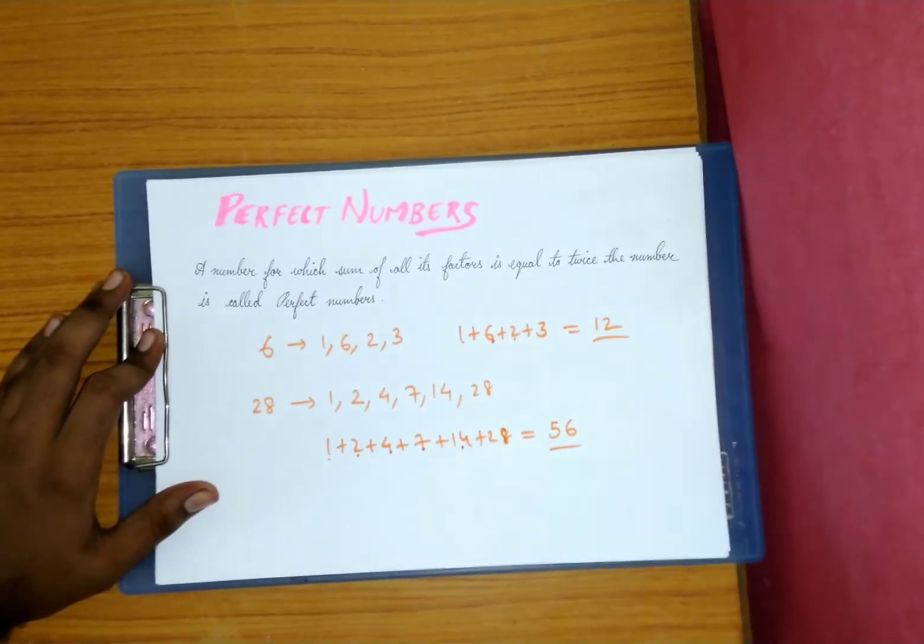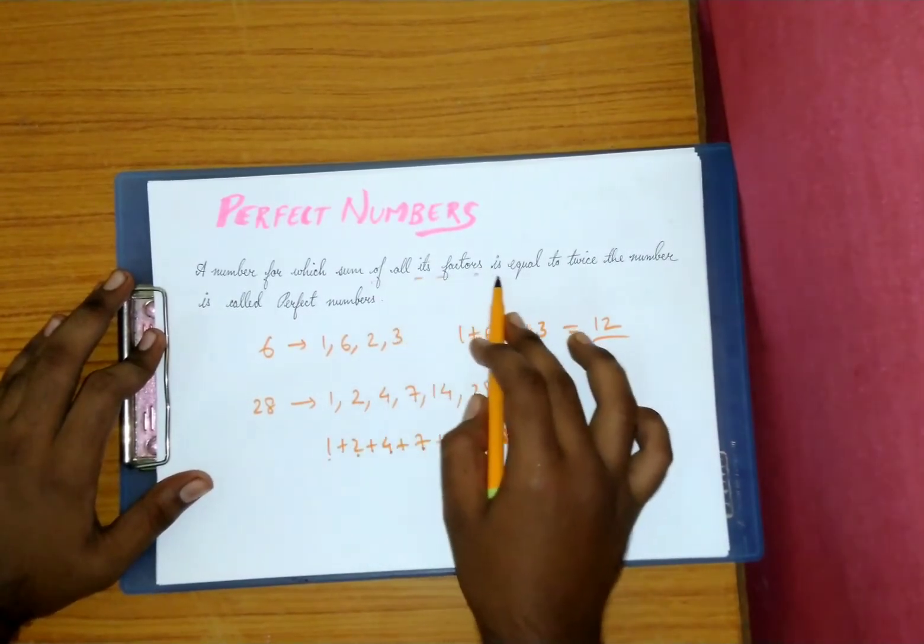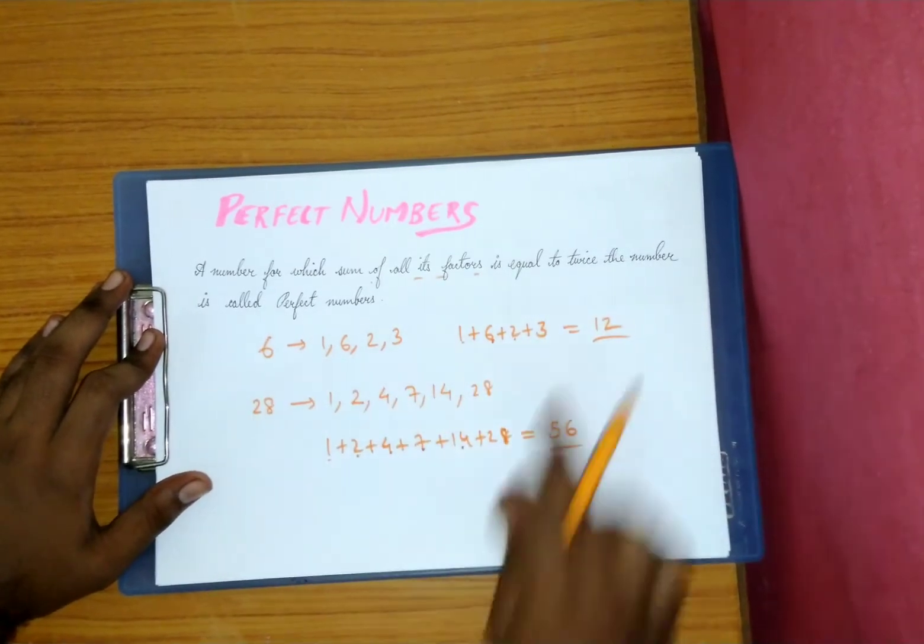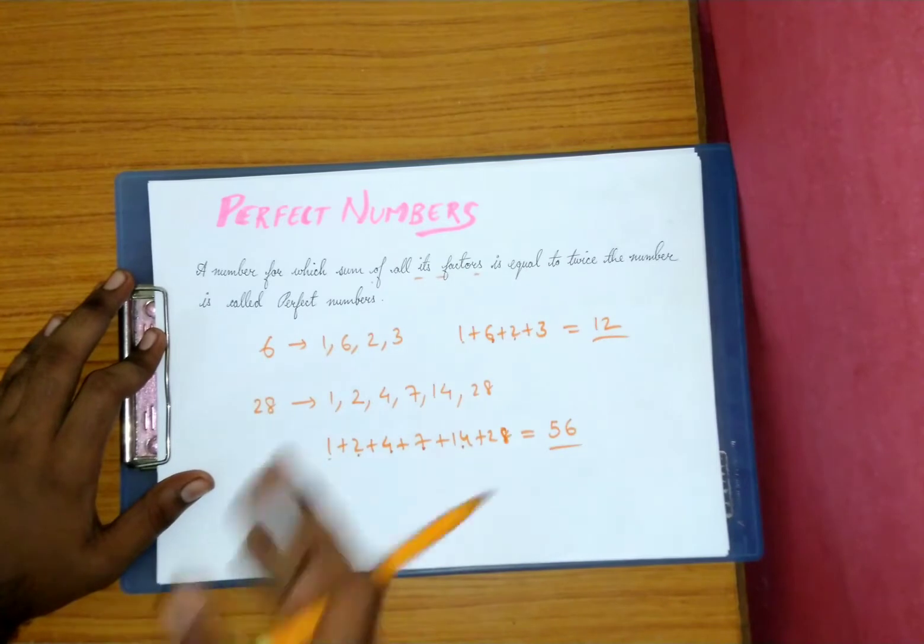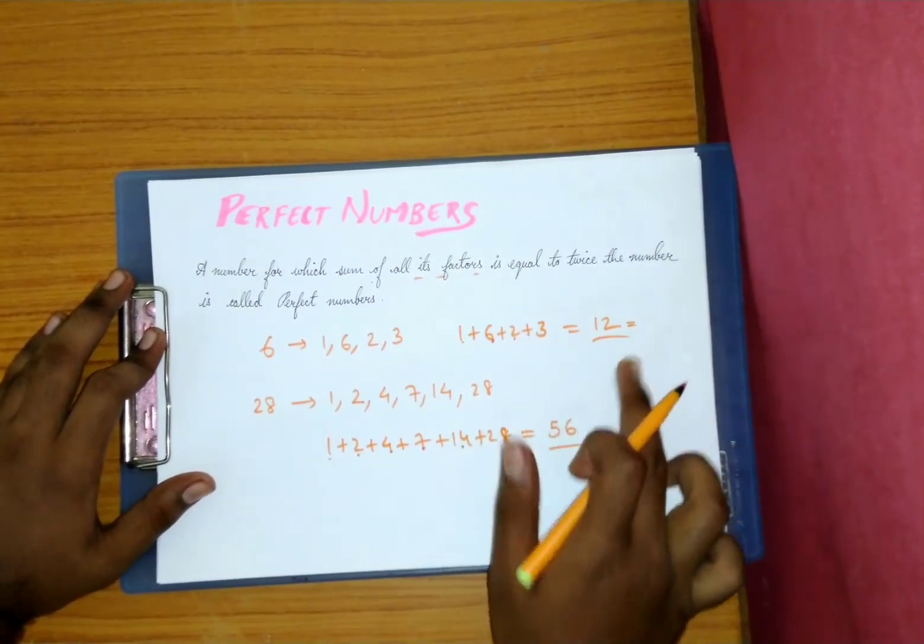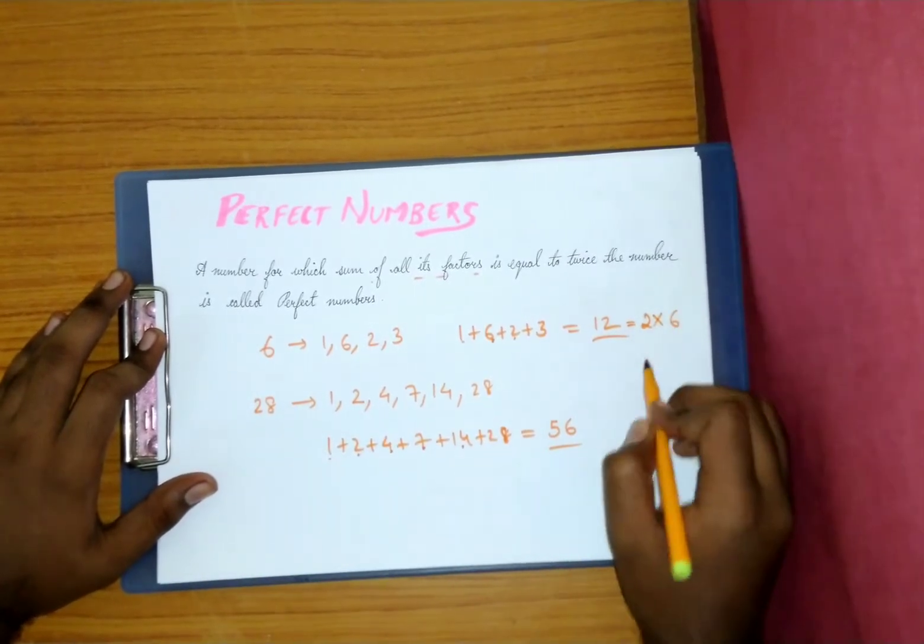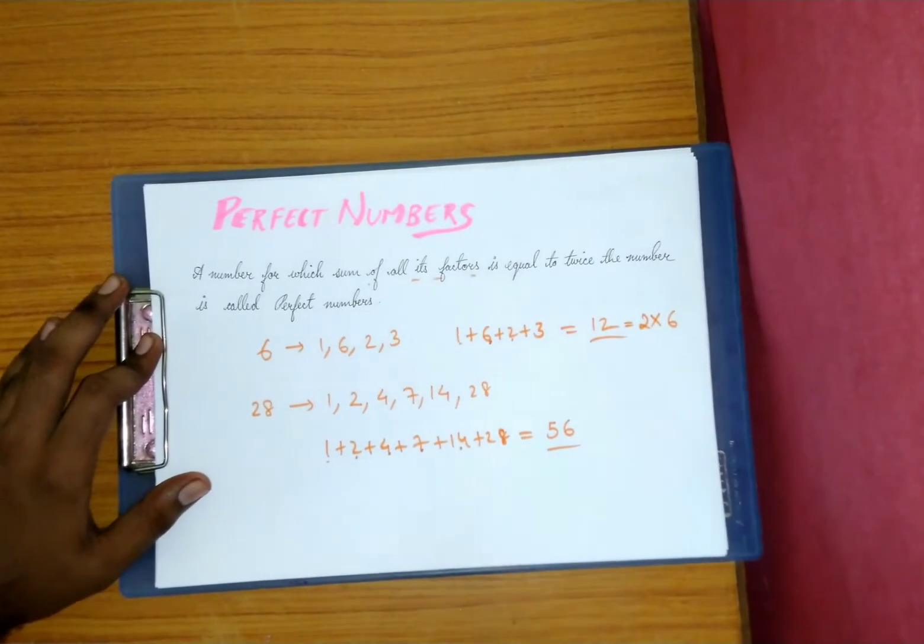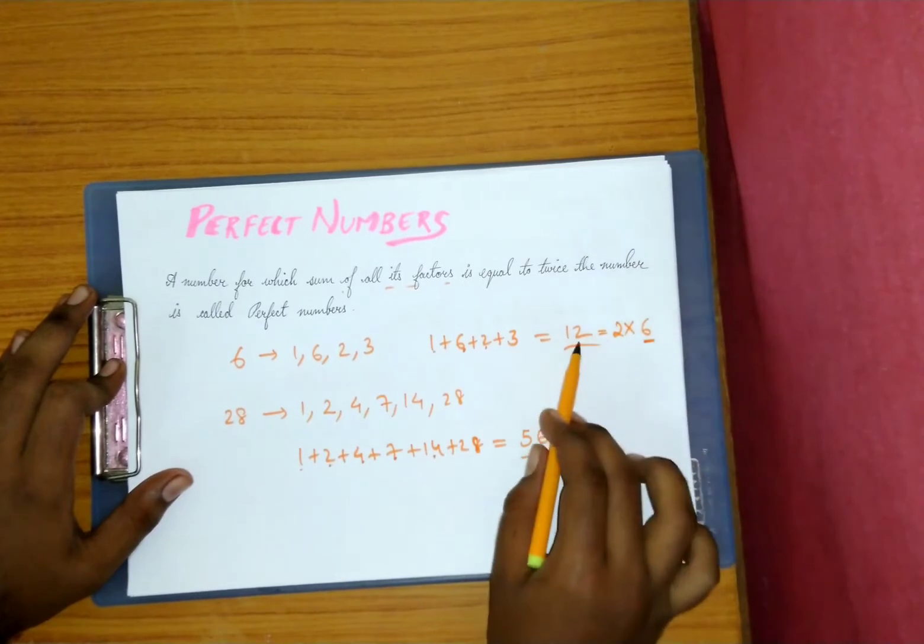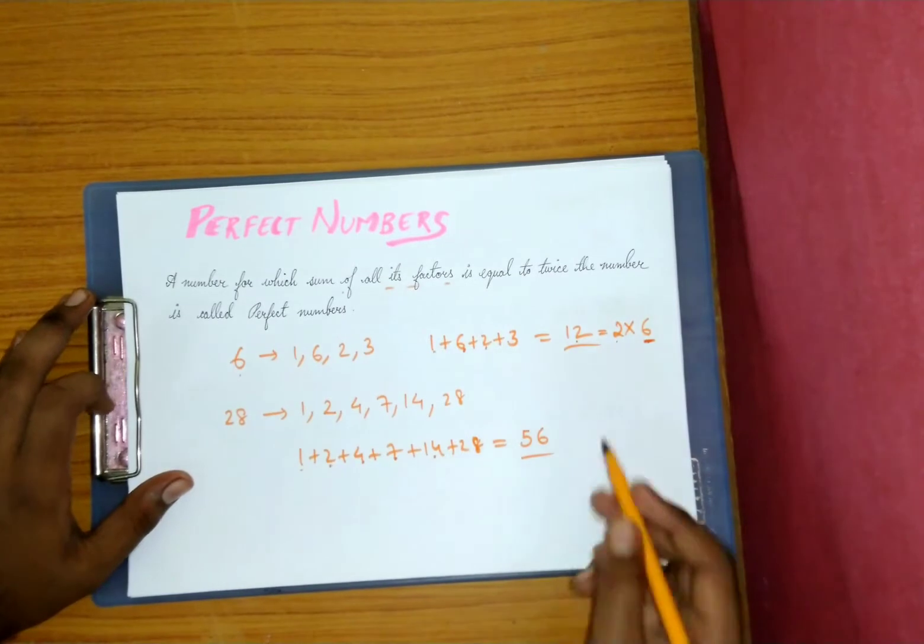So these are the two numbers we got, the sum of the factors. Sum of all these factors is equal to twice the number. Which number? This number for which we are finding the factors. Twice means 2 into the number, that means 6. 2 into that number, you can see here 12. 2 into 6, so 6 is the question itself.